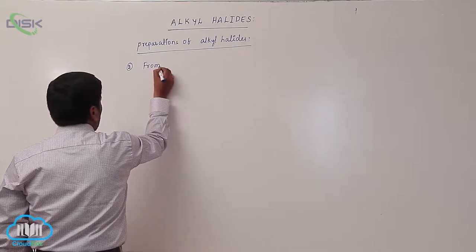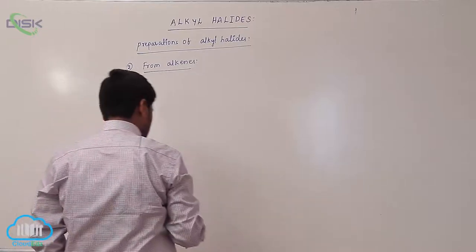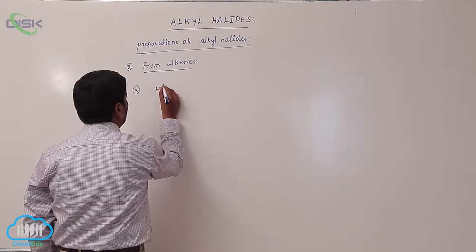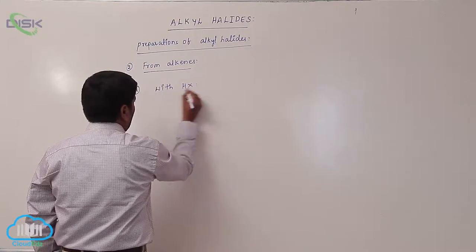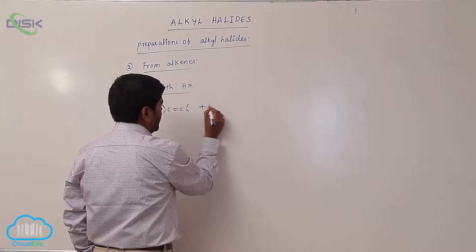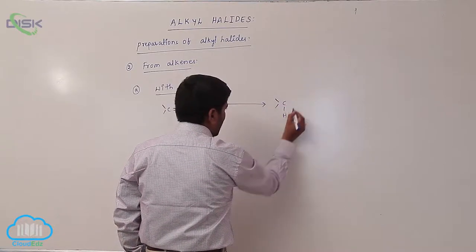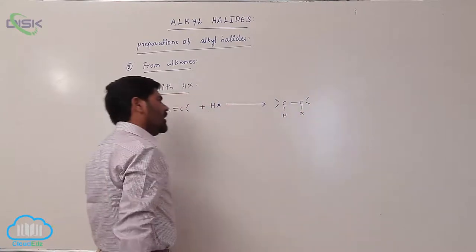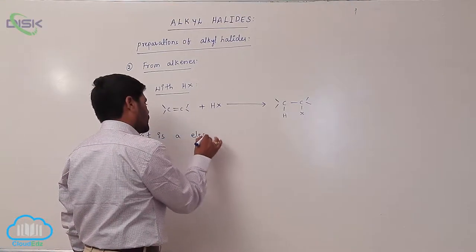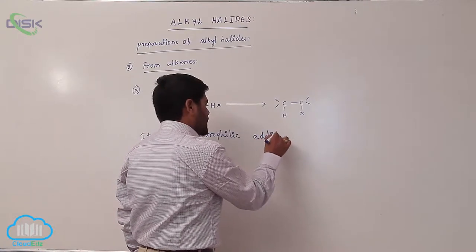When an alkene reacts with a hydrogen halide, it forms an alkyl halide. This is an electrophilic addition reaction.